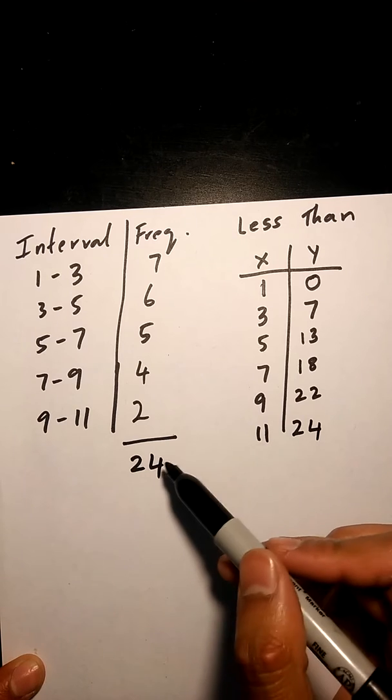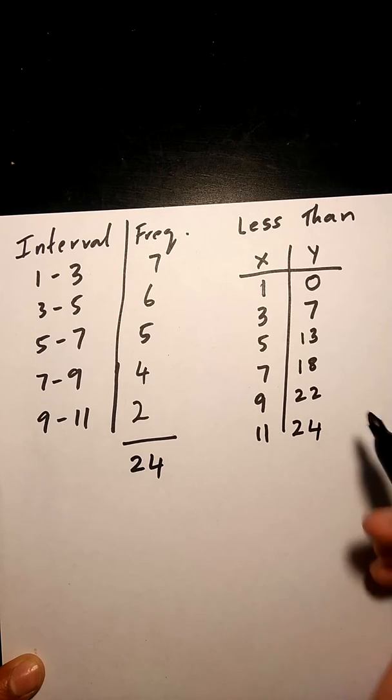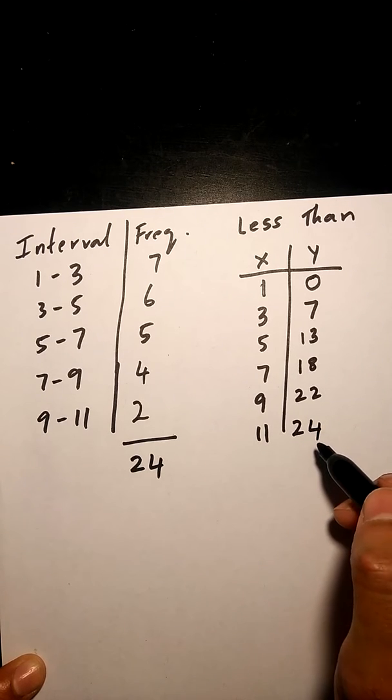The total of your frequency table will always equal to the last value in your less than cumulative frequency table.